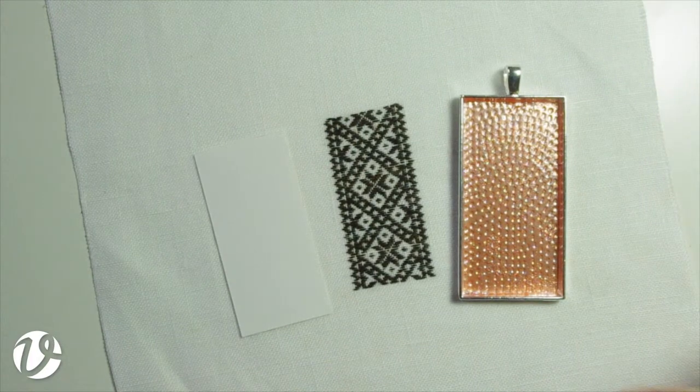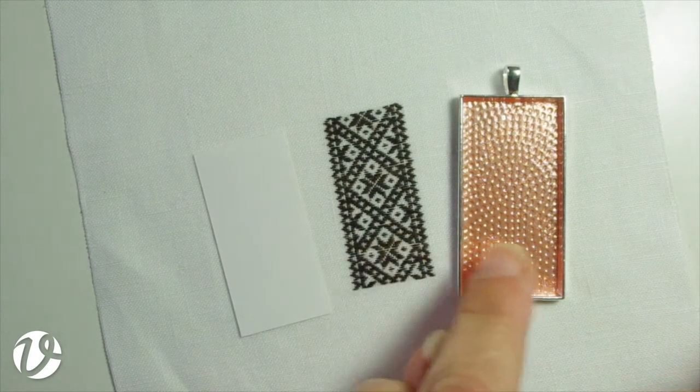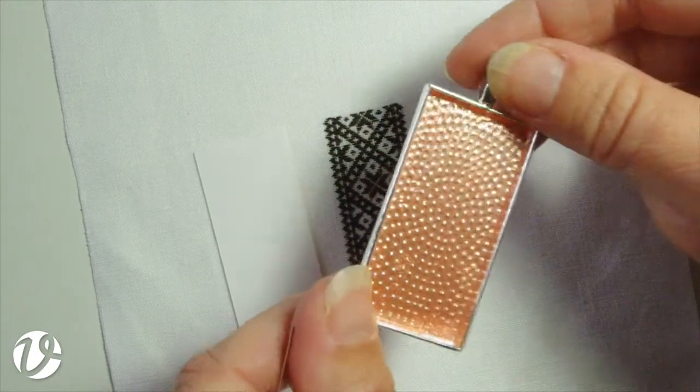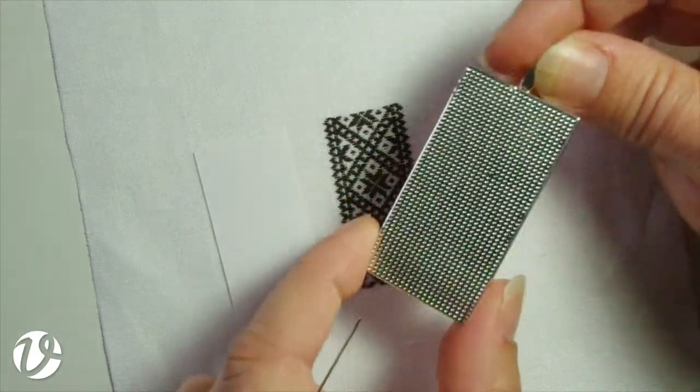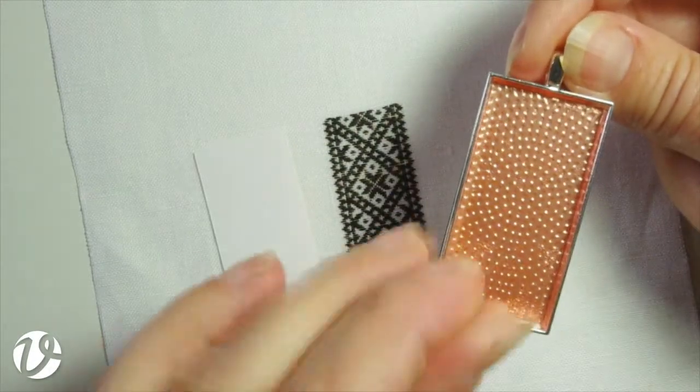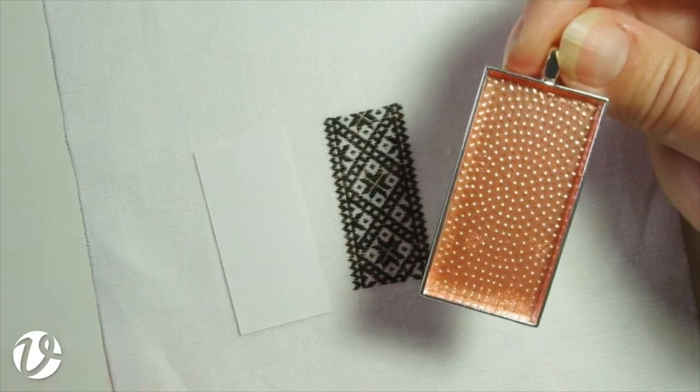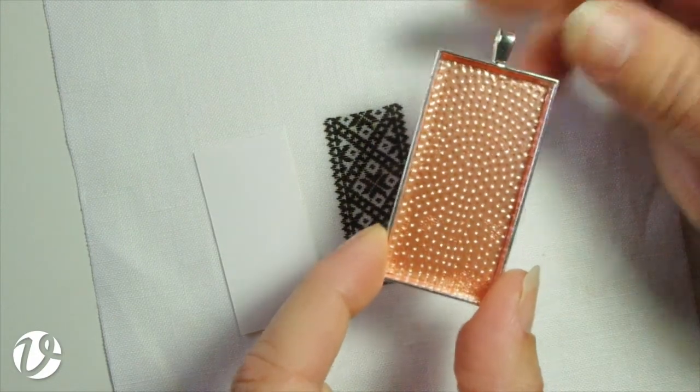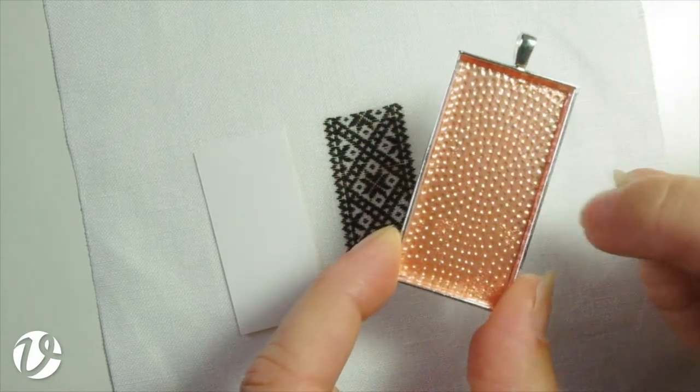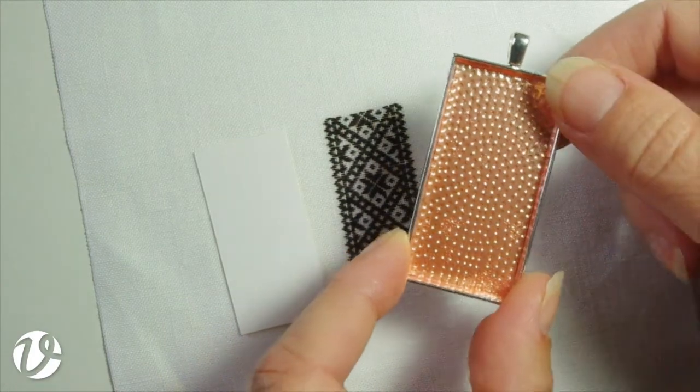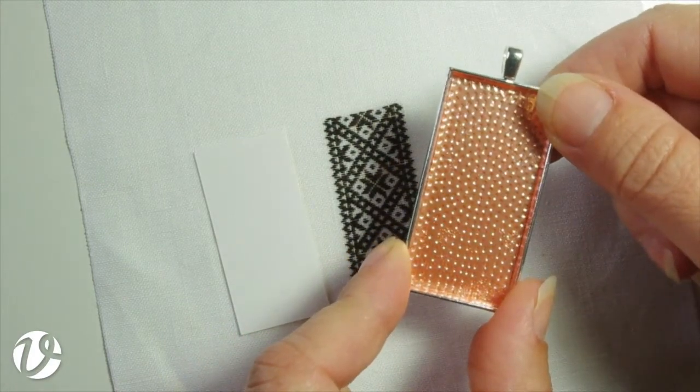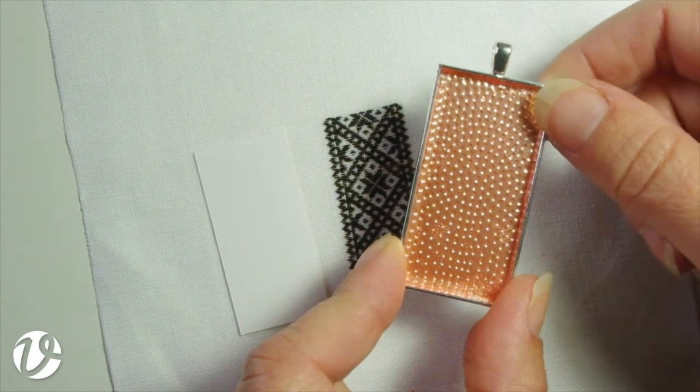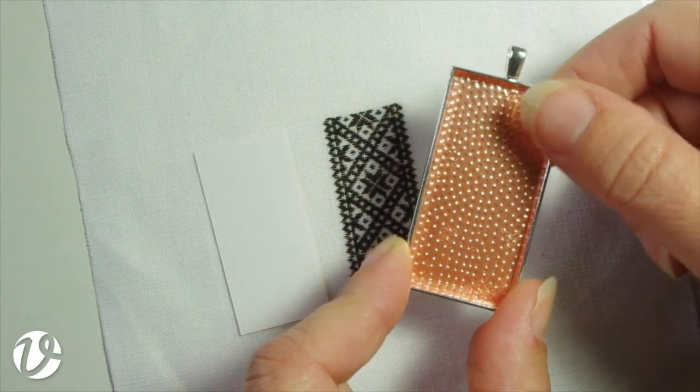So what we are going to do today is to mount this embroidery into a pendant. This is the pendant tray that we will be using. You can see that it's made of metal. In the base of it here is a double-sided adhesive. It's a really strong and sticky one. Once I take that orange covering off that will leave just the adhesive there and that's what we will stick it to. Using a double-sided adhesive means you don't have to worry about finding the glue that will glue fabric to metal and it also won't have any strings going anywhere.